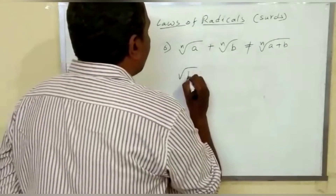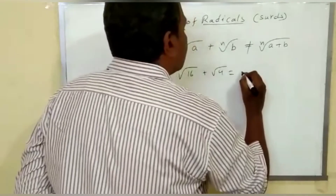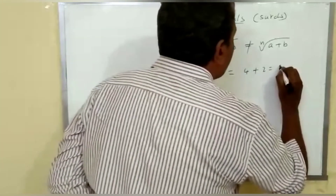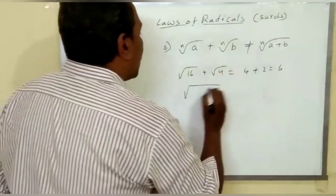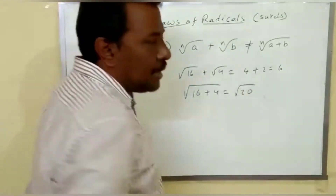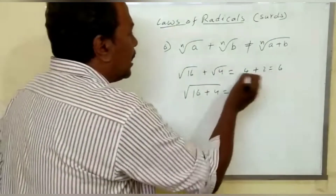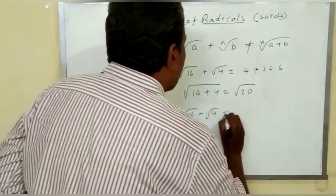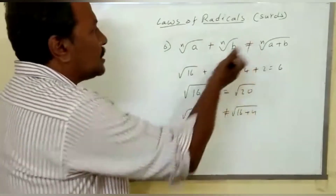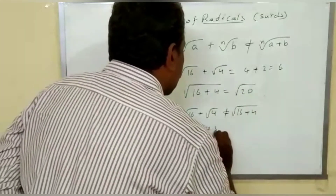For example, take square root of 16 plus square root of 4. Square root of 16 equals 4, square root of 4 equals 2, so 4 plus 2 equals 6. Now take square root of 16 plus 4, which equals square root of 20. But 20 is not a perfect square number. So square root of 16 plus square root of 4 is not equal to square root of 16 plus 4 — LHS is not equal to RHS.